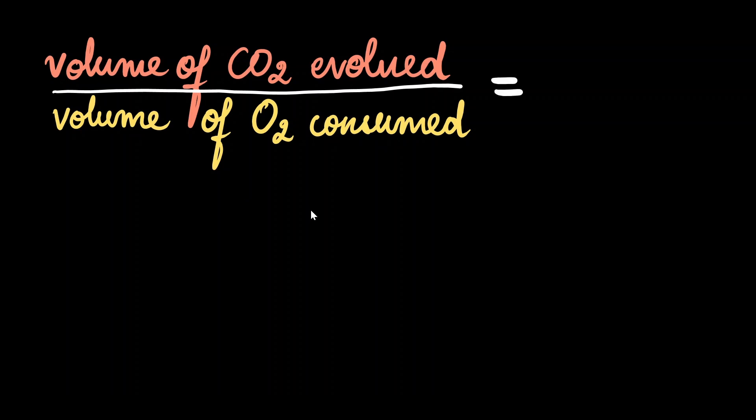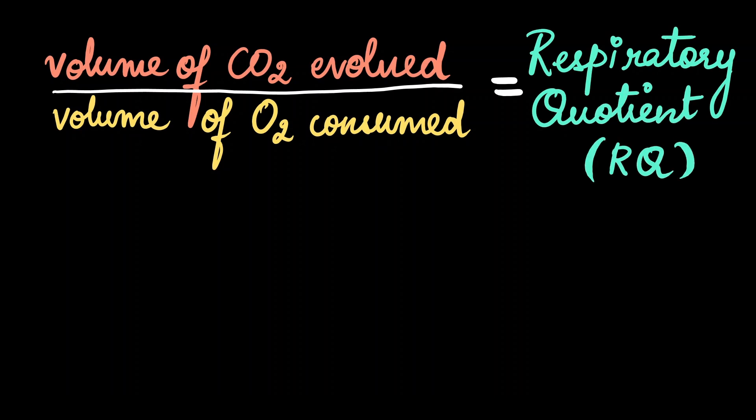When we take the volume of carbon dioxide that is evolved over the volume of oxygen that is consumed during aerobic respiration, we end up with a value called the respiratory quotient or we can simply call it the RQ.